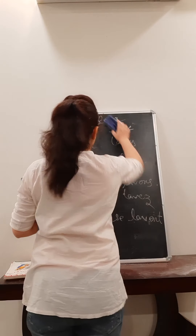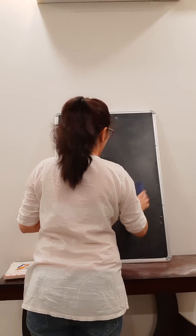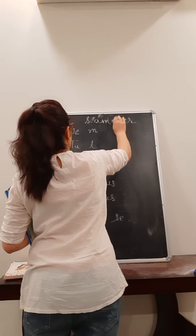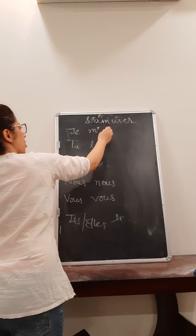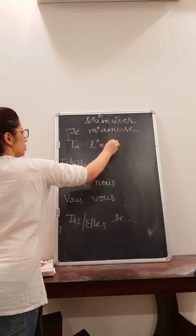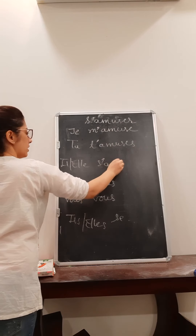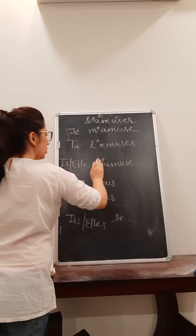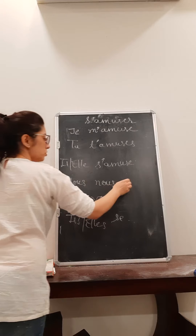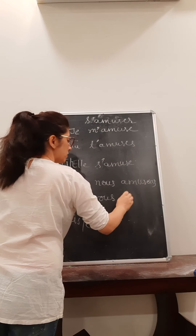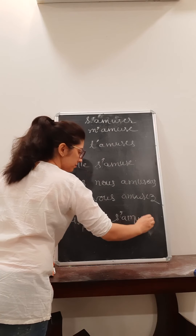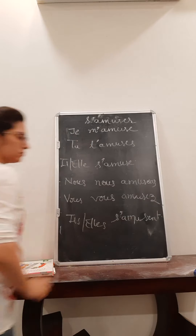For example, I'm taking 's'amuser' — 'amuser' means to enjoy or to have fun. It will go like this: 'je m'amuse' — I enjoy myself. 'Tu t'amuses' — you enjoy yourself. 'Il/elle s'amuse' — here the vowel is clashing, so we apply elision.